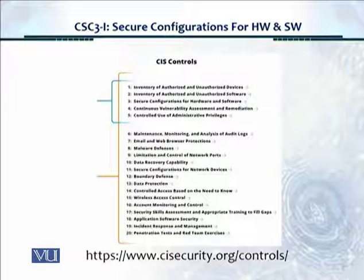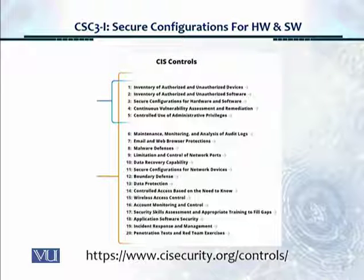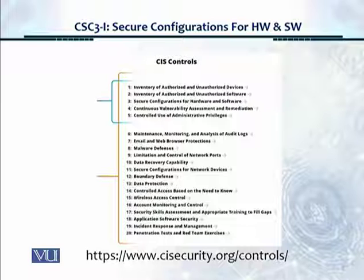Let's take a look at the overall graphic. As you can see, the first five of the critical security controls, which are outlined in blue on your left, are considered more important. The rest of the 15 complete the 20 critical security controls. The first 10 controls are related to systems, and if you look at the Excel sheet available on the CIS Center for Internet Security website, there's a family categorization.